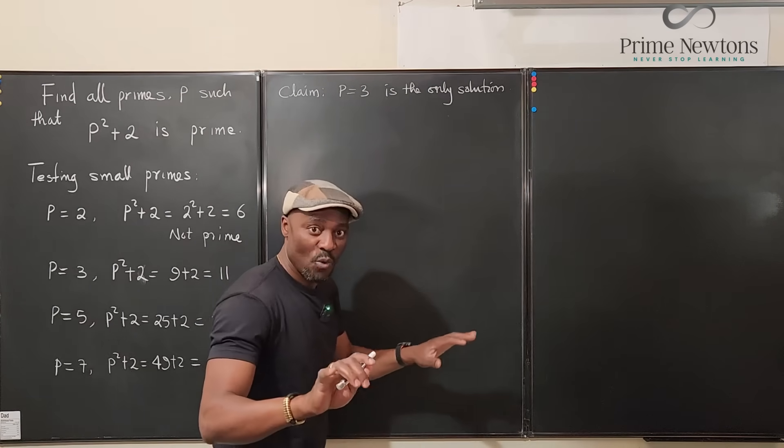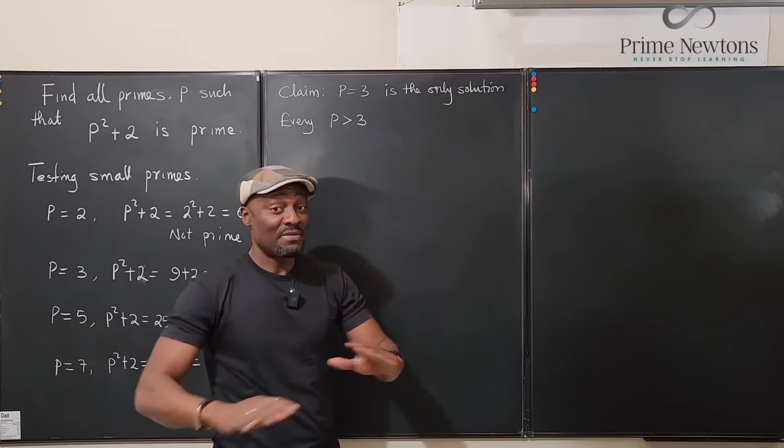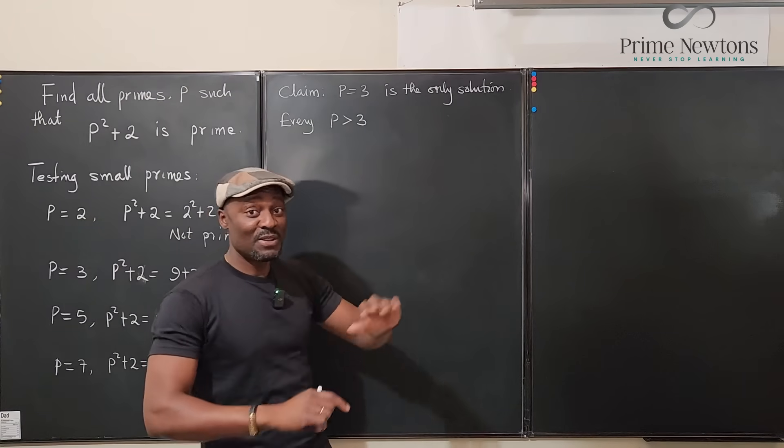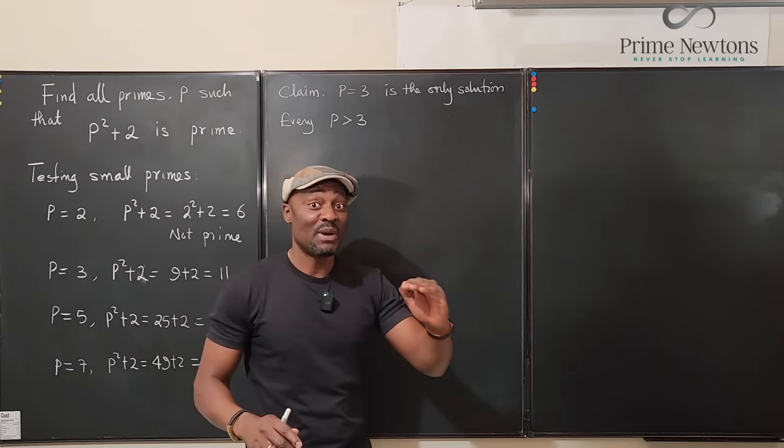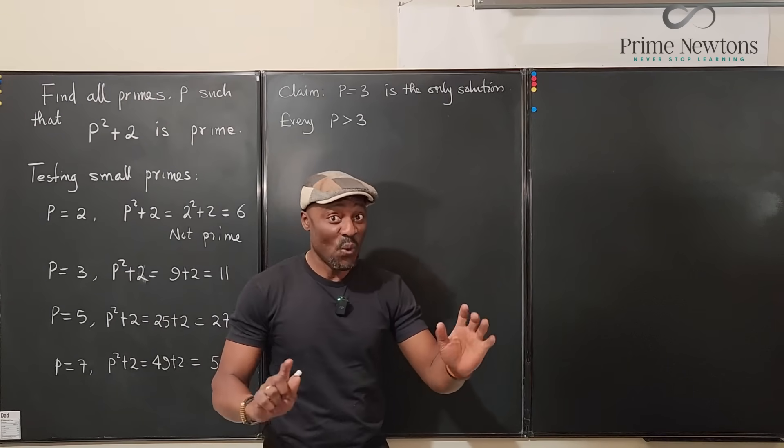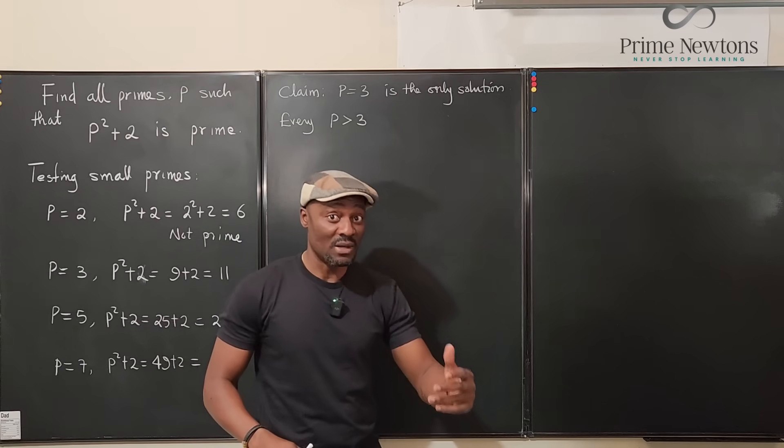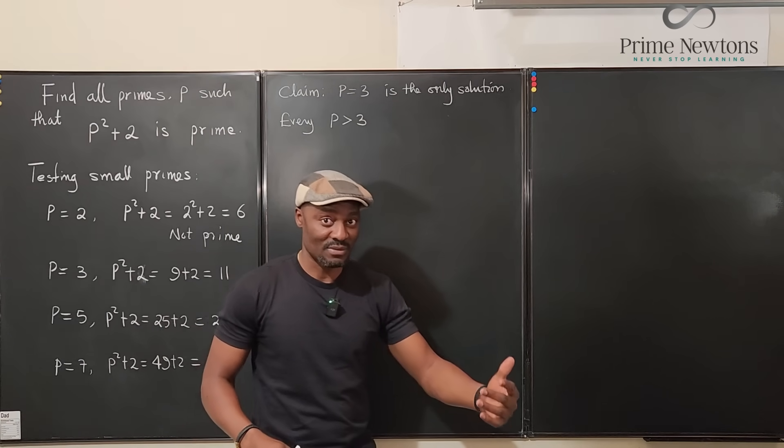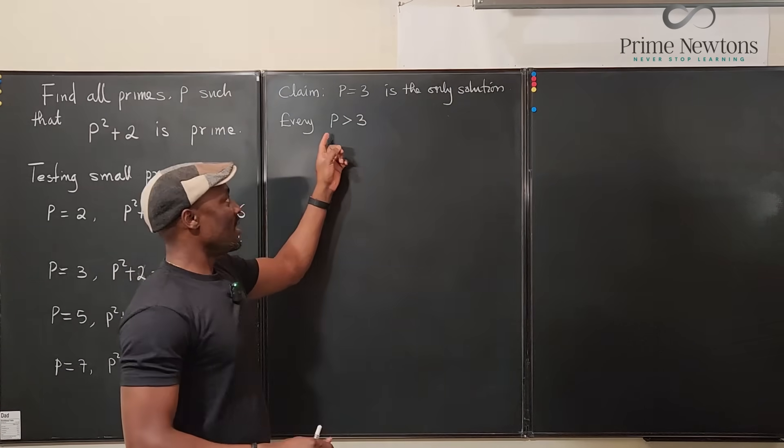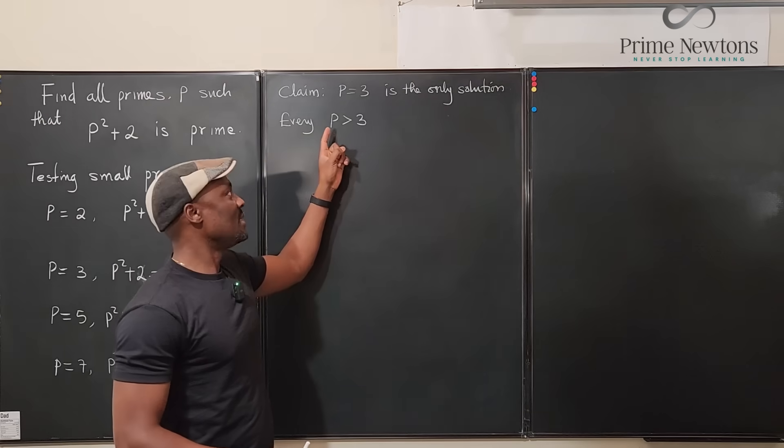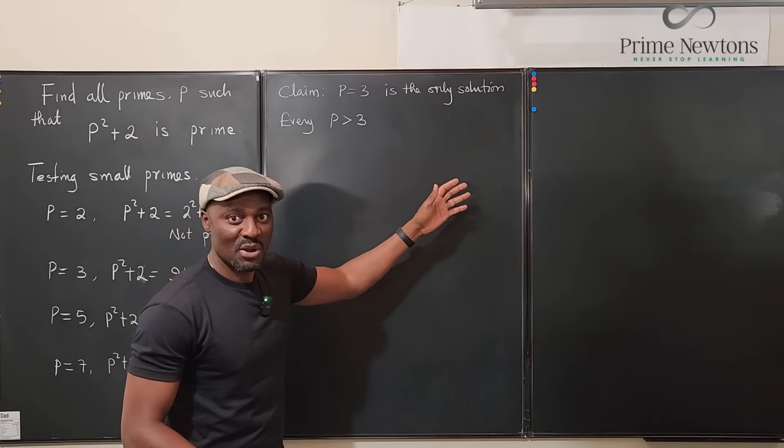Now watch this. Remember, in fact, this is not just for prime numbers. If you take any number and you divide it by 3, it is either 3 divides it or there's a remainder of 1 or there's a remainder of 2. Well, if you take a prime number, clearly 3 does not divide any prime number.